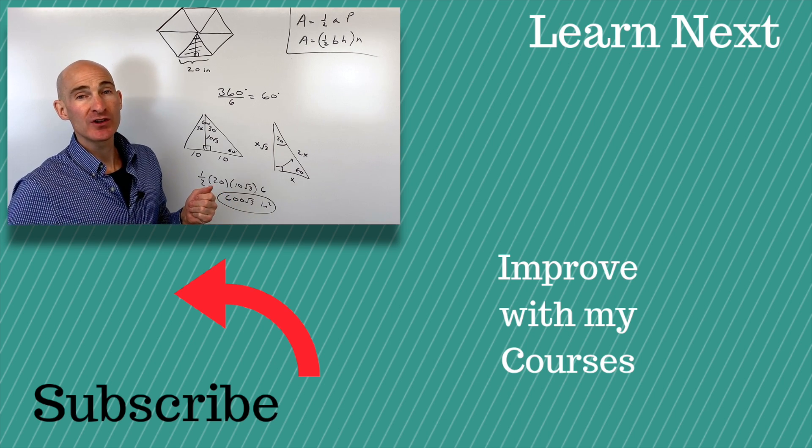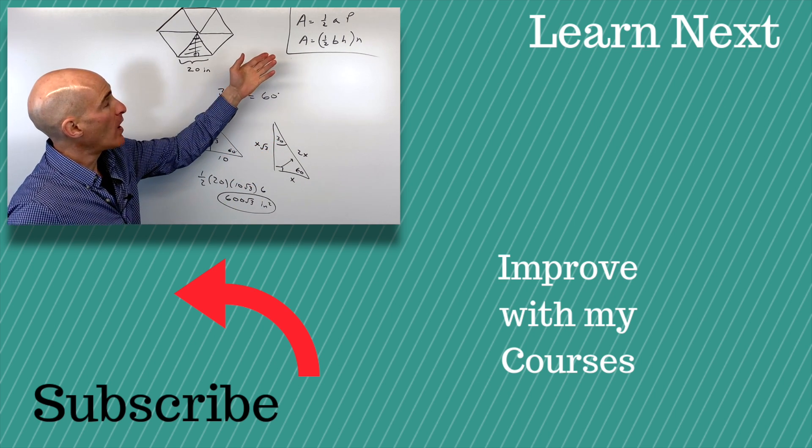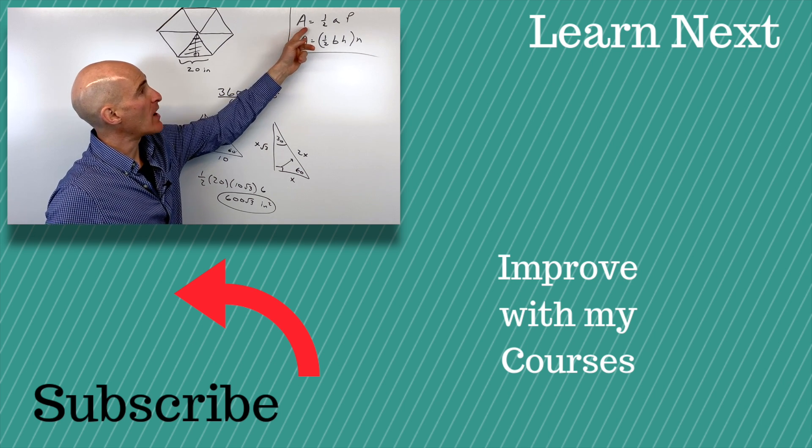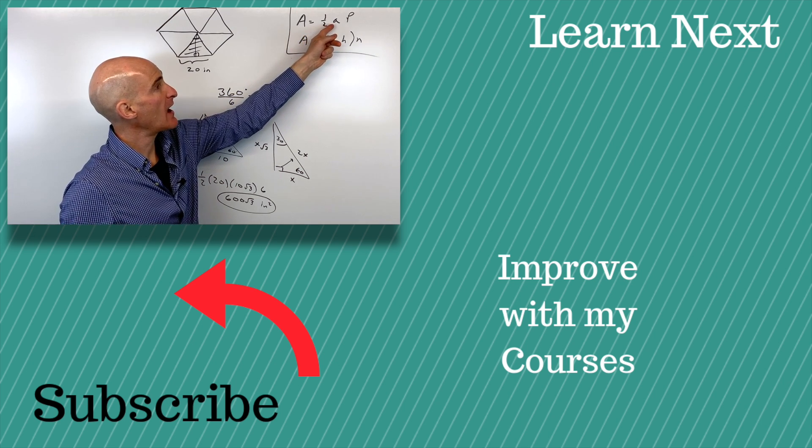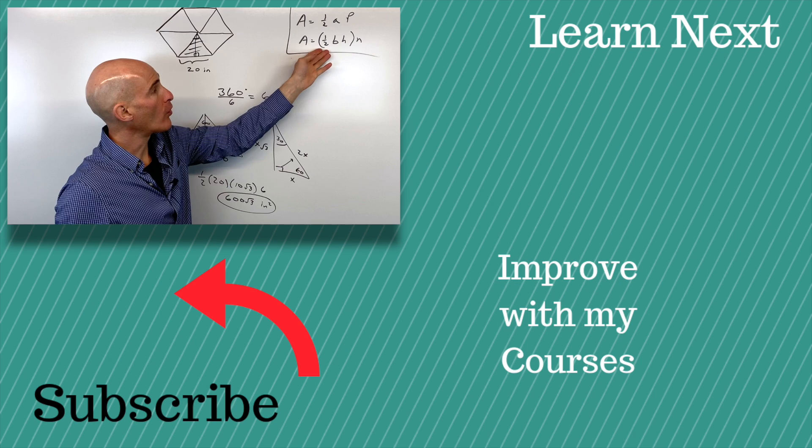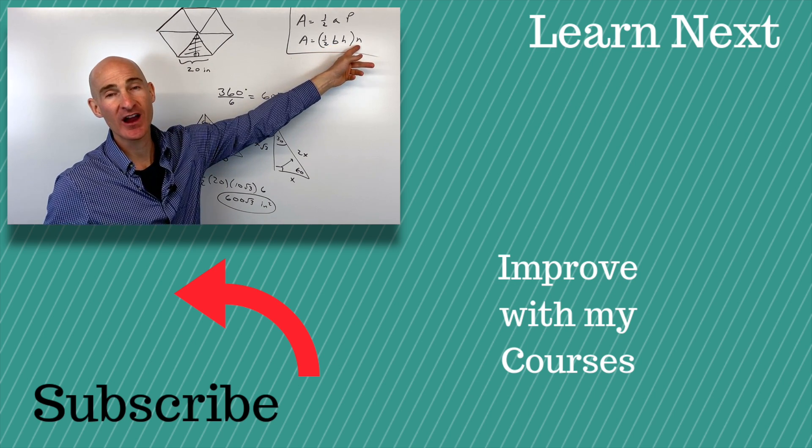If you want to see another example, check out the video I did right there. If you want to memorize some formulas, you can use one half apothem times perimeter, or one half base times height times the number of triangles.